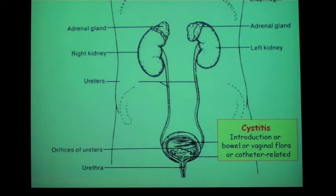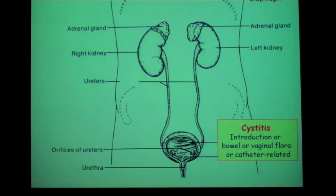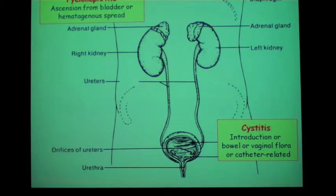This slide shows the anatomical site. We'll start with cystitis, which is a bladder infection, and normally occurs when bowel flora or vaginal flora are introduced into the bladder. A more serious infection is pyelonephritis, which occurs when infection ascends from the bladder, or if there's a hematogenous spread during a systemic infection with an organism.